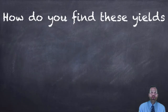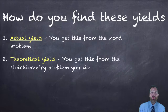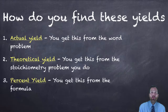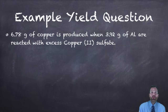So how do you find these yields? The actual yield is what you get from the word problem — they'll tell you in the word problem what was made, or in the lab it's what you weigh on a scale. The theoretical yield you get from the stoichiometry problem that you do — you have to do the math to get your theoretical yield. And the percent yield you get from the formula we just talked about.